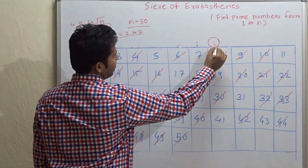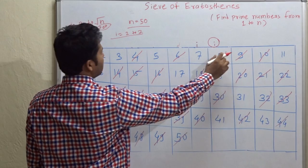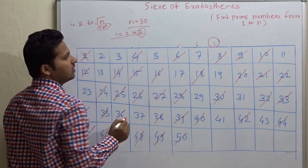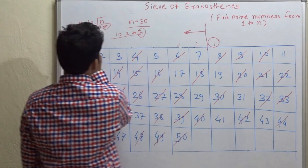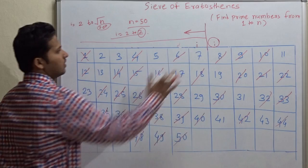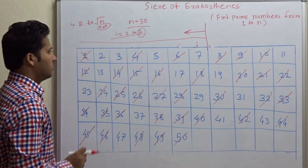Now, increment i. But i pointing to location where the number is 8. This means that we have exceeded 7. So now, we cannot go further. i just goes from 2 to square root of n. So we stop here.